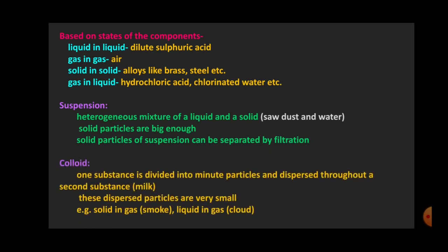Next is colloid. In a colloid, one substance is divided into minute particles and dispersed throughout a second substance — like milk. The different components in milk are very, very small and cannot be seen with the naked eye. Such a solution is called a colloid, and the dispersed particles cannot be separated by filter paper. Examples include smoke — where unburned carbon particles are dispersed in gas — and clouds, which are liquid dispersed in gas. These are all examples of colloids.